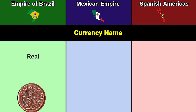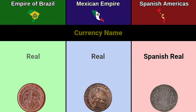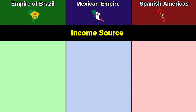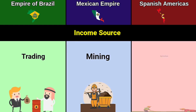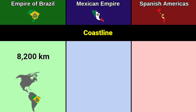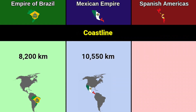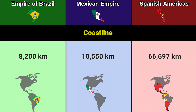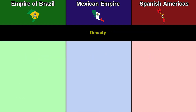Currency name: Real, Real, Spanish Real. Income source: trading, mining, agriculture. Coastline: 8,200 kilometers, 10,550 kilometers, 66,697 kilometers.